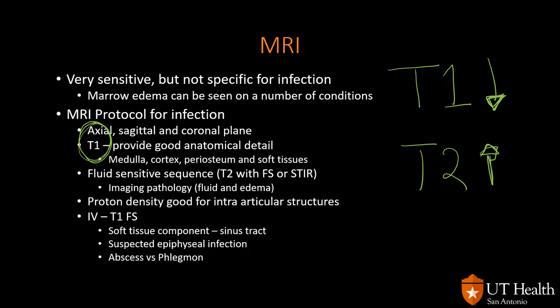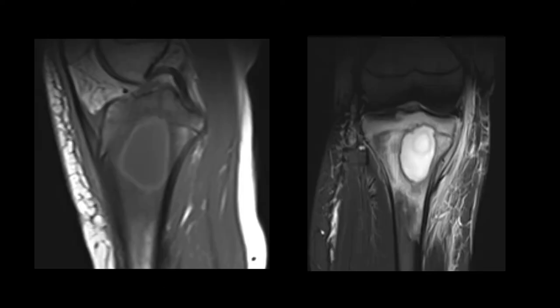T2-weighted images are pathologically sensitive because they detect edema well, but a protocol without T1 for infection is insufficient since T1 sequences define the diagnosis. Proton density images are more useful for intra-articular structures such as fibrocartilage, meniscus, labrum, and tendons. In this T1 and T2 example of a Brody's abscess, the T2 shows edema around the intraosseous abscess, and on T1 there is decreased bone marrow signal intensity — diagnostic for osteomyelitis.